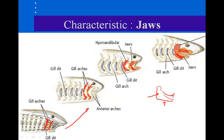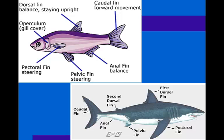Why is the evolution of the jaw important? It was going to allow us the ability to prey on a larger range of animals. Fish are also going to have paired fins.